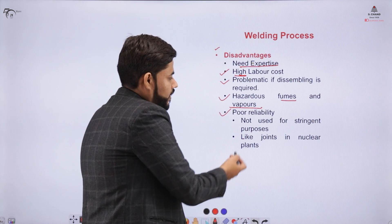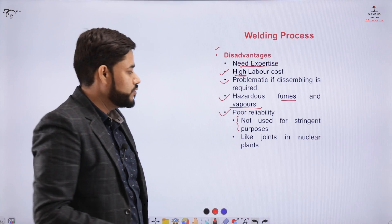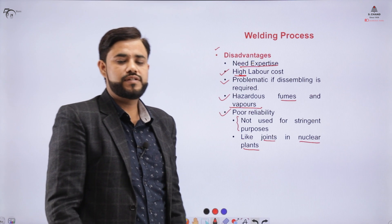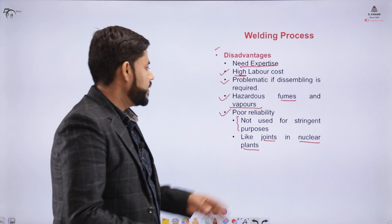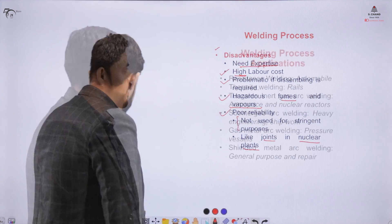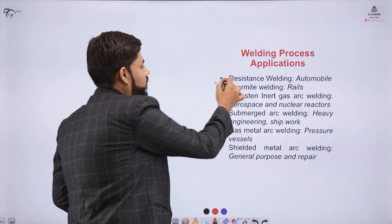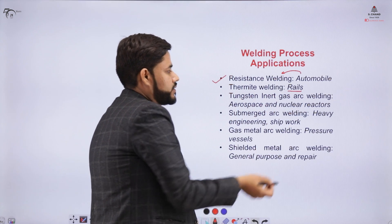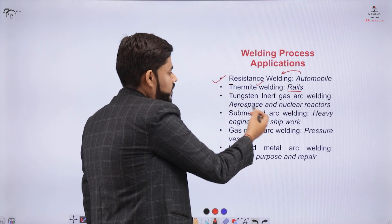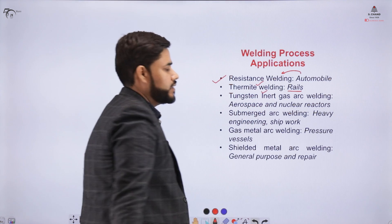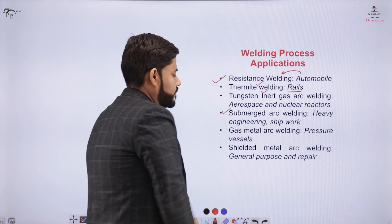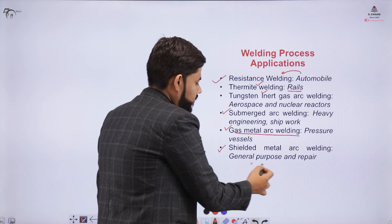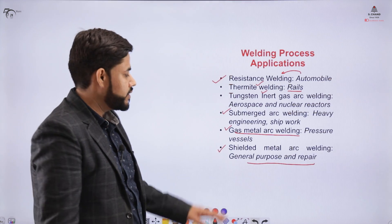Welding also leads to hazardous fumes and vapors, which are harmful to the worker. It has poor reliability for stringent purposes such as nuclear power plants or aerospace applications, where very high accuracy processes are required. Applications include: resistance welding (spot or seam welding) for automobiles; thermit welding for joining rail tracks; tungsten inert gas (TIG) welding for nuclear and aerospace applications; submerged arc welding for heavy engineering and ship work; gas metal arc welding for pressure vessels; and shielded metal arc welding for general purpose and repair work.